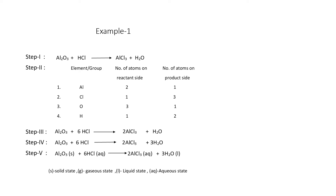We still have oxygen and hydrogen unbalanced, so we move to step four. On the reactant side, there are 3 oxygen atoms, so we write 3 before the water molecule — now oxygen is balanced. Checking hydrogen: on the reactant side there are 6, and on the product side there are also 6, so hydrogen is automatically balanced, as mentioned earlier.